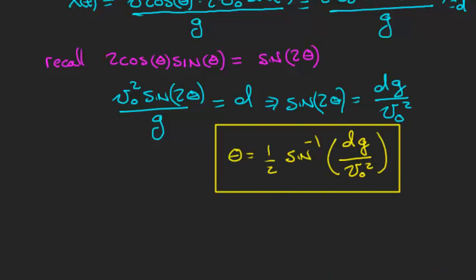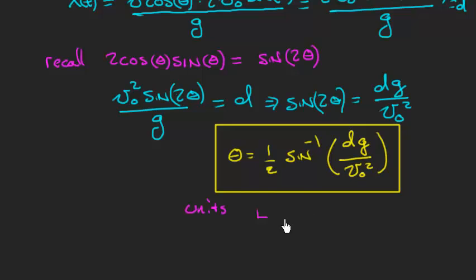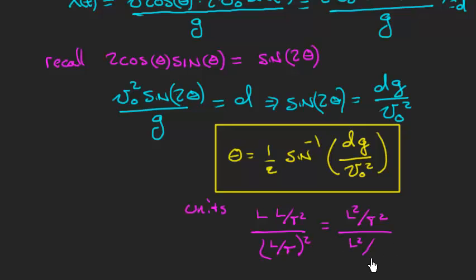Let's do a units check. In the argument of arcsin we have d (length) times g (length/time²) in the numerator — giving length²/time² — divided by V0² (length/time)², which is also length²/time². These cancel, leaving the argument dimensionless, exactly as required for an arcsin. Units check out. There's a lot more physical interpretation we can do here, and I'll save that for part B of the video.